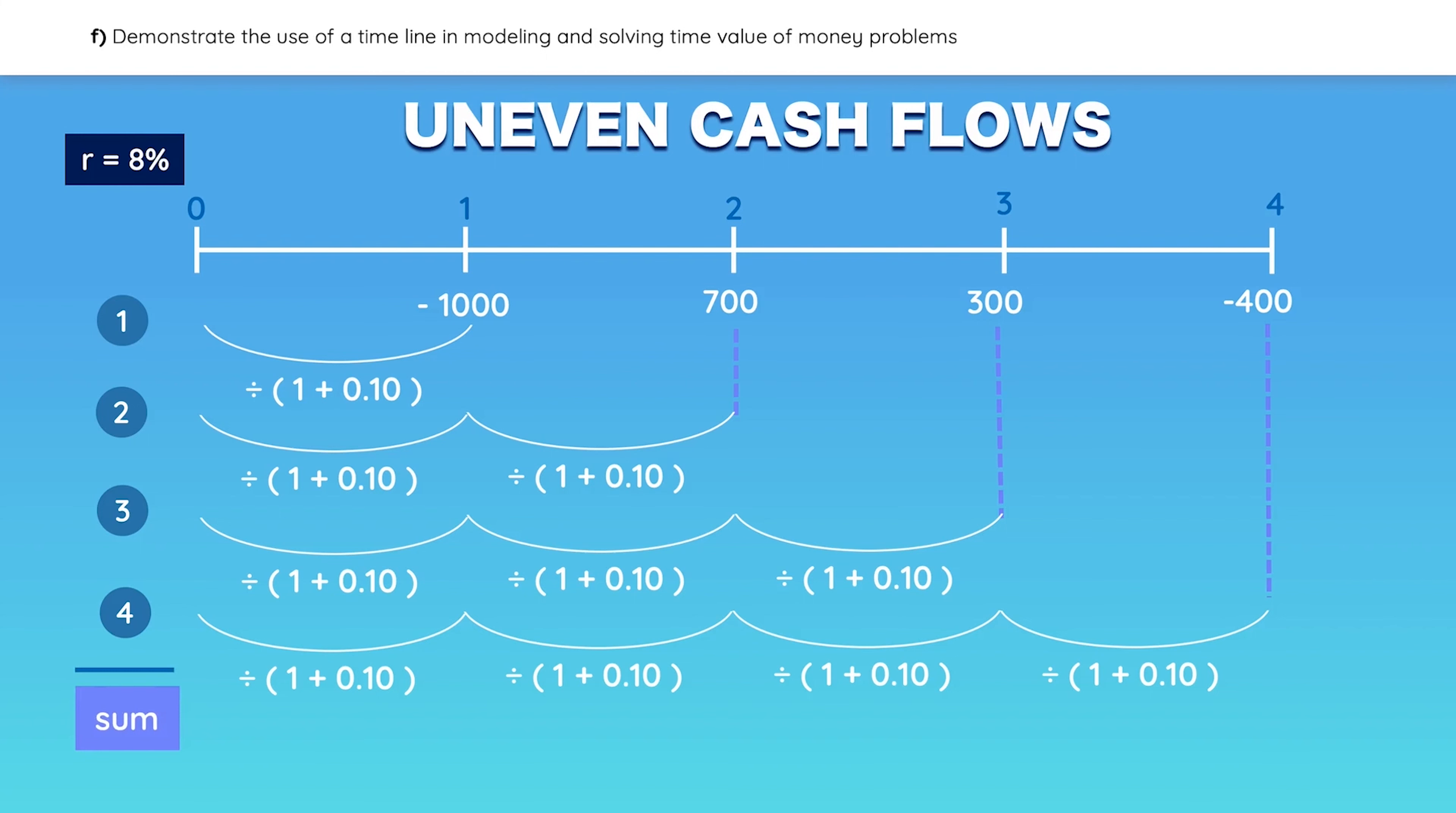So instead, you can go the faster route and use the CF function in your calculator. Here are the calculator keystrokes that tell you what buttons to press and the display which shows you what your calculator screen should show. Remember to clear your work first.